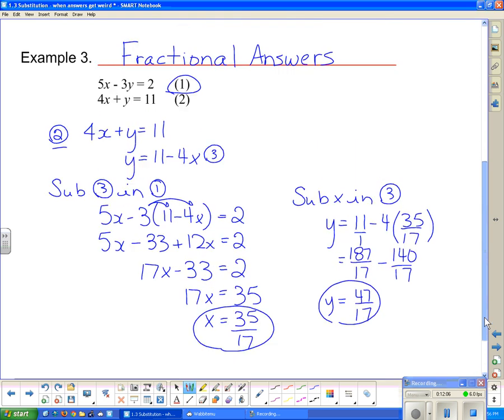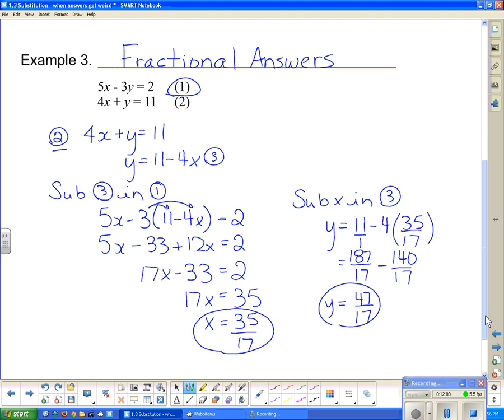And if we were to graph those, graph those two lines, they would cross at 35 over 17 and 47 over 17. So therefore, the solution is 35 over 17 for our x comma 47 over 17 for our y. And that actually concludes the lesson for today. Give a few more of these a try and see if you come across any that are fractional, inconsistent, which means there is no answer, or dependent, which means there's an infinite number of answers.